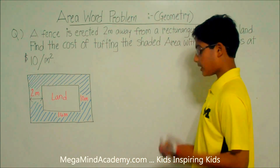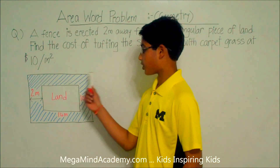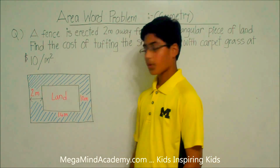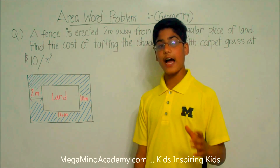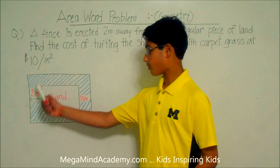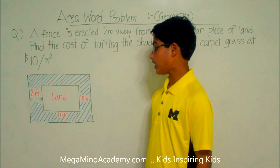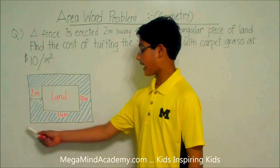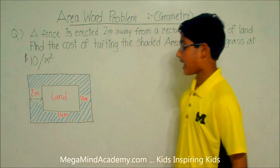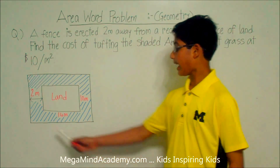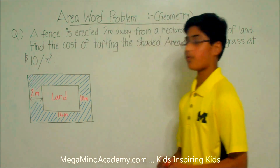So we need to find the cost of tufting the shaded area. To find the cost of tufting the shaded area, we need to find the shaded area. To find the shaded area, we need to first find the area of the piece of land and then subtract it from the area of the big rectangle. So let's do that.